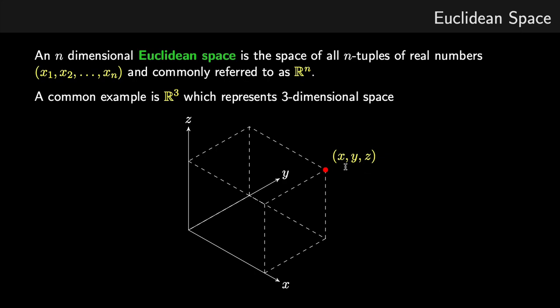These are all real numbers, and these represent the signed distance along each axis from the origin where the axes cross.